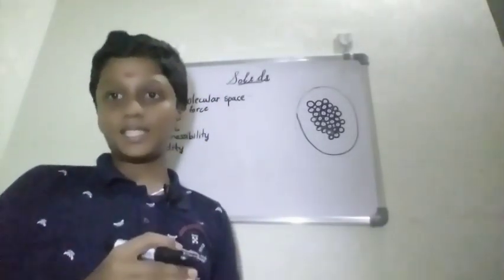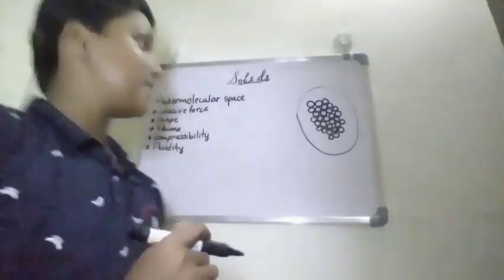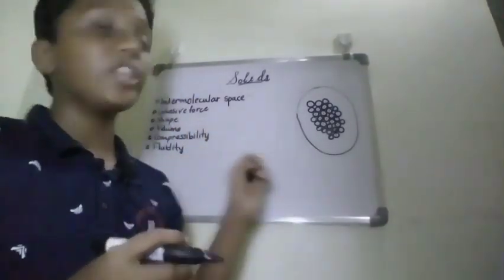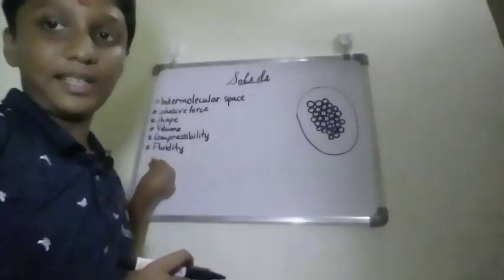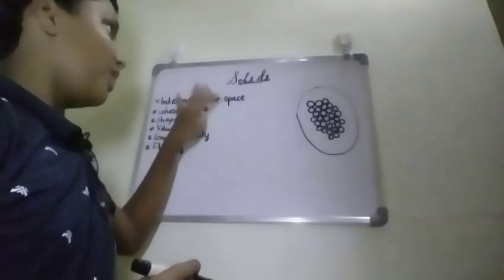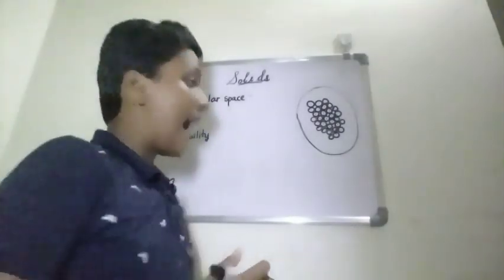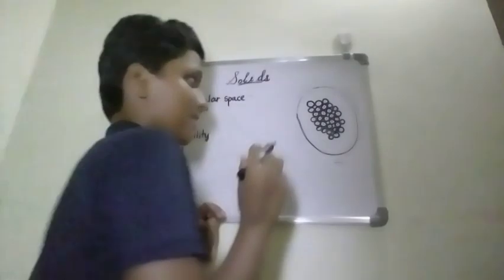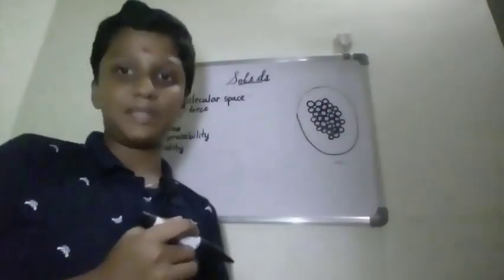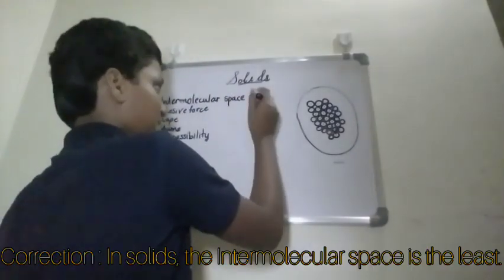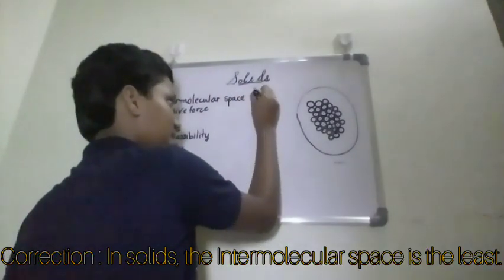The 3 states of matter — first of all we are looking into solids. Let us look into the properties of solids. When you speak about the properties, you will be taking into account these criteria. First of all, intermolecular space. As you can see in the particle model of solids, they have very less intermolecular space. So we can say that intermolecular space is less.